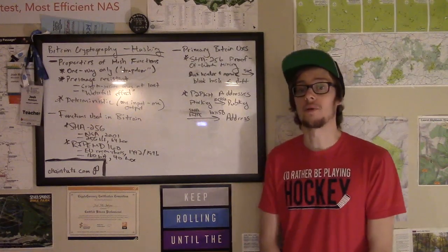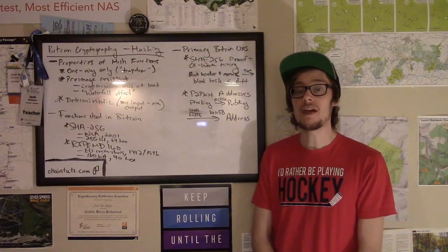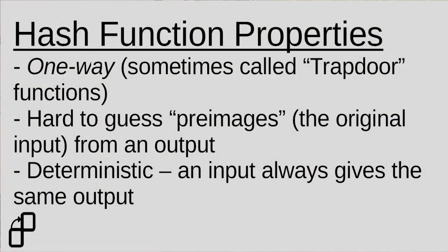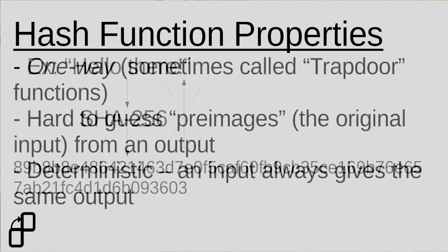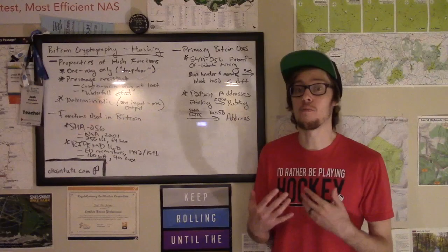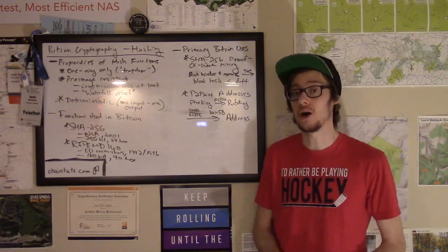Now the first very important property of hash functions is that they are one-way functions. When you put an input into a hash function, you get an output. And that hash output, often called the digest, is not something that you can plug into any formula or any algorithm to go back to the original input. These are often called trapdoor functions in cryptography, because once the data falls into that trapdoor of the hash function, it can't go backwards to what it originally was.